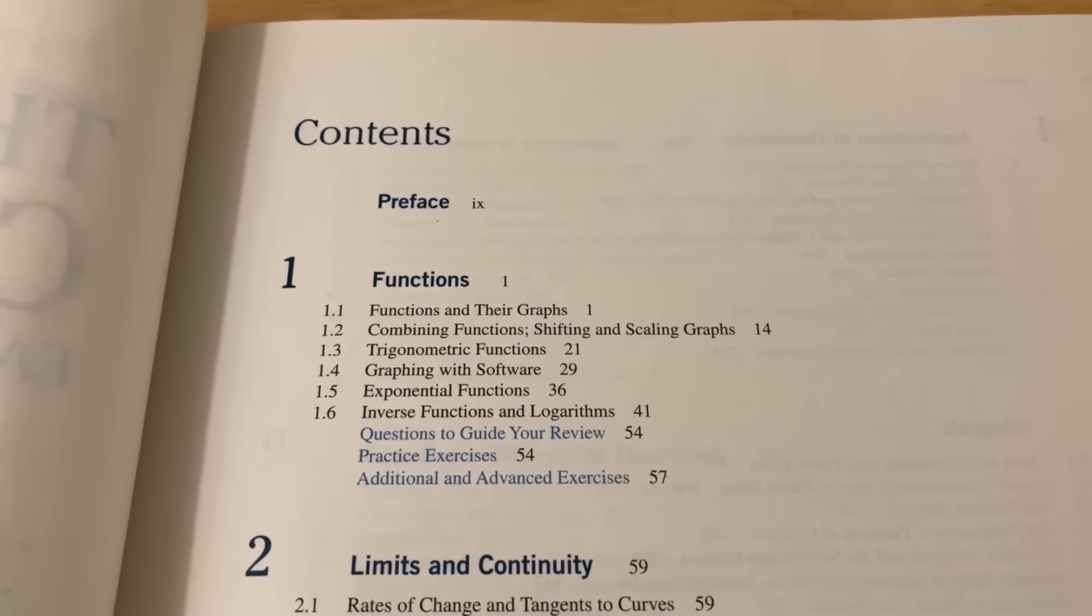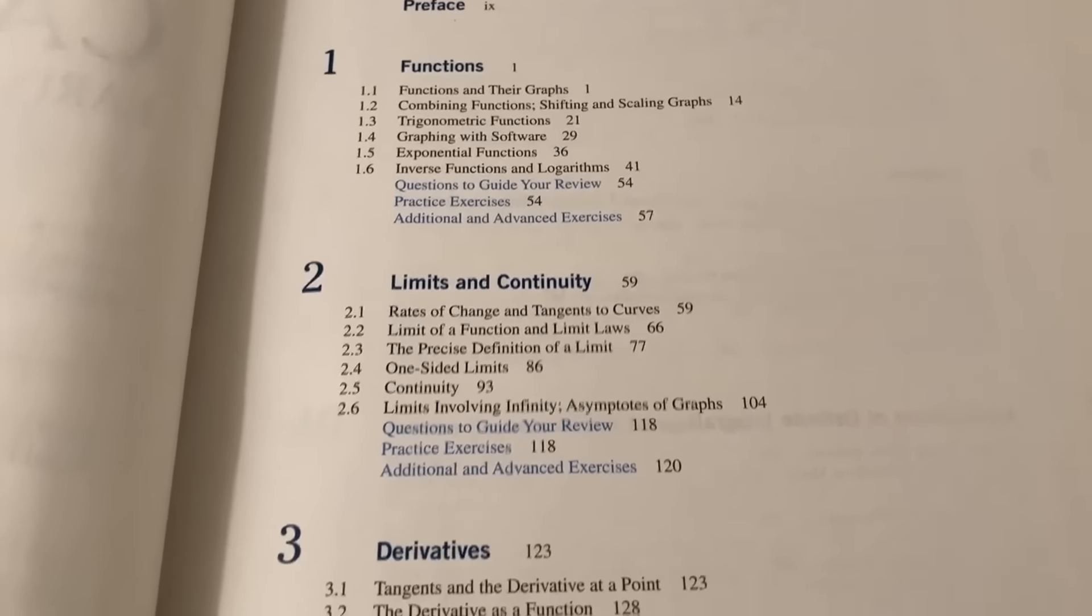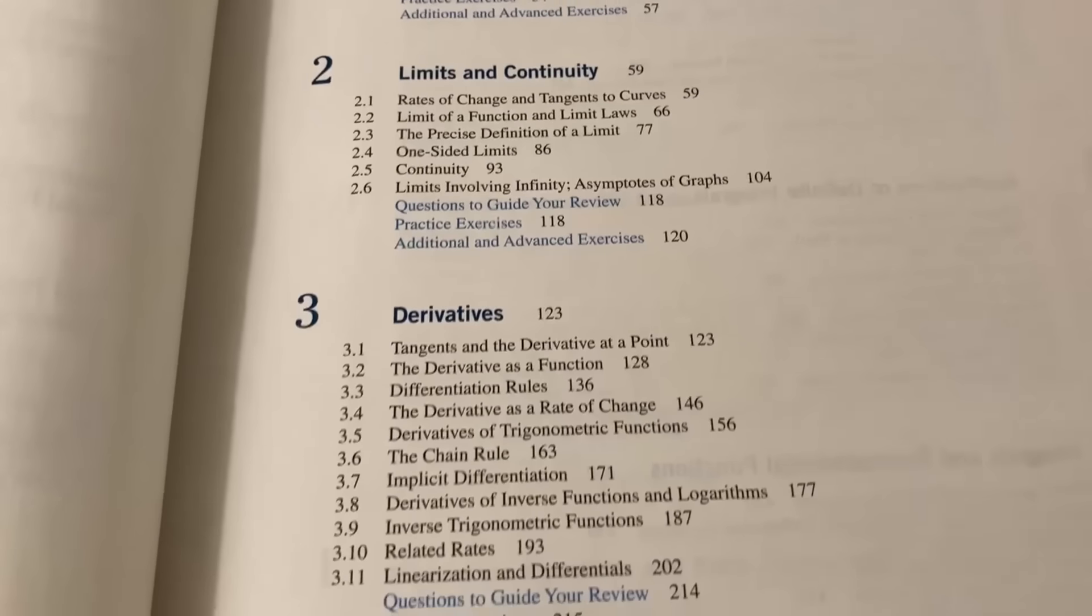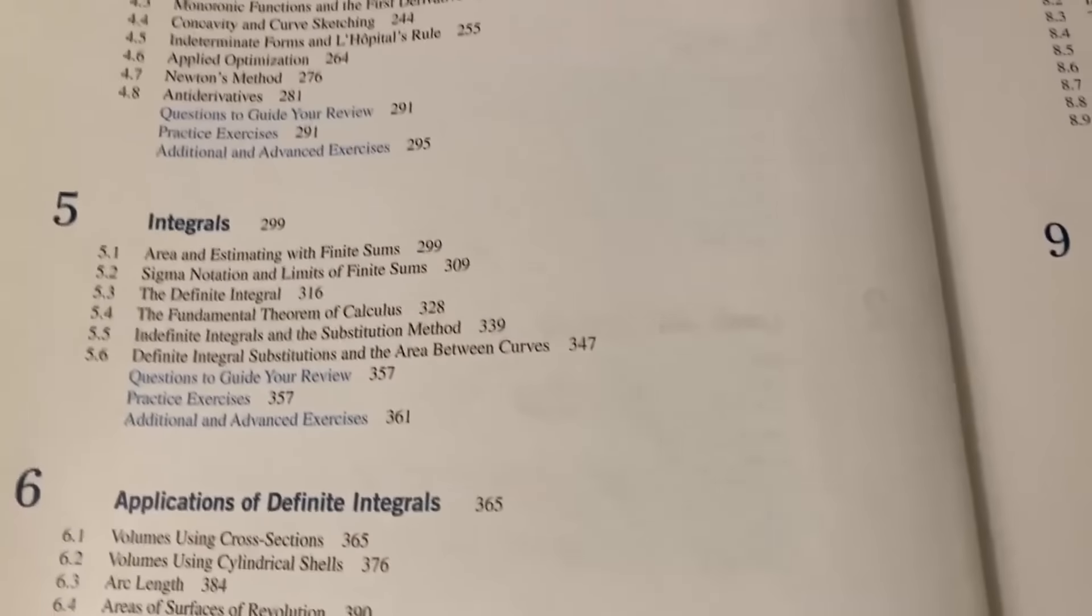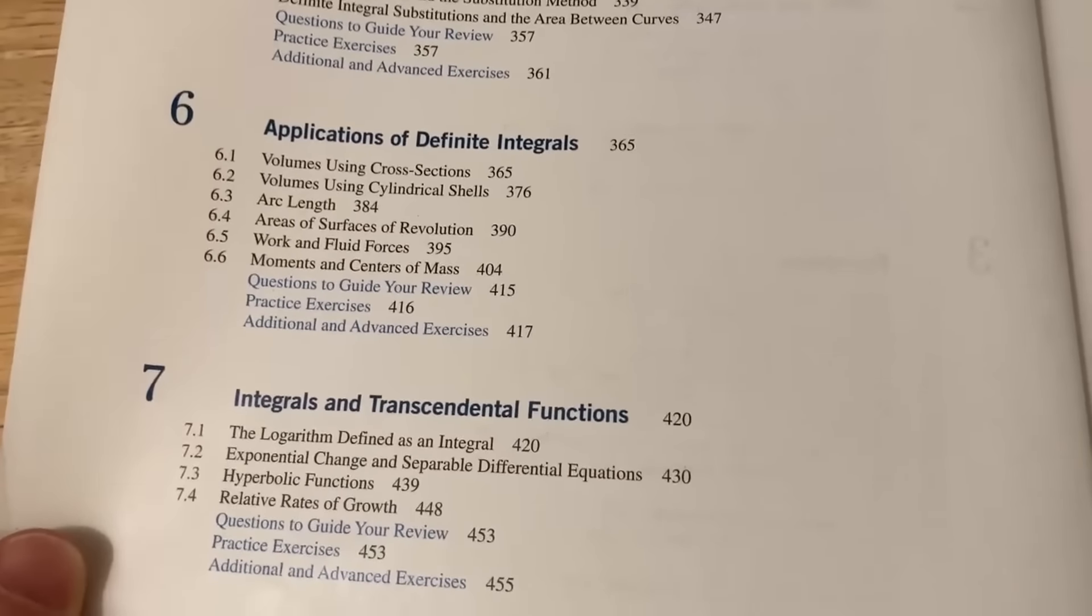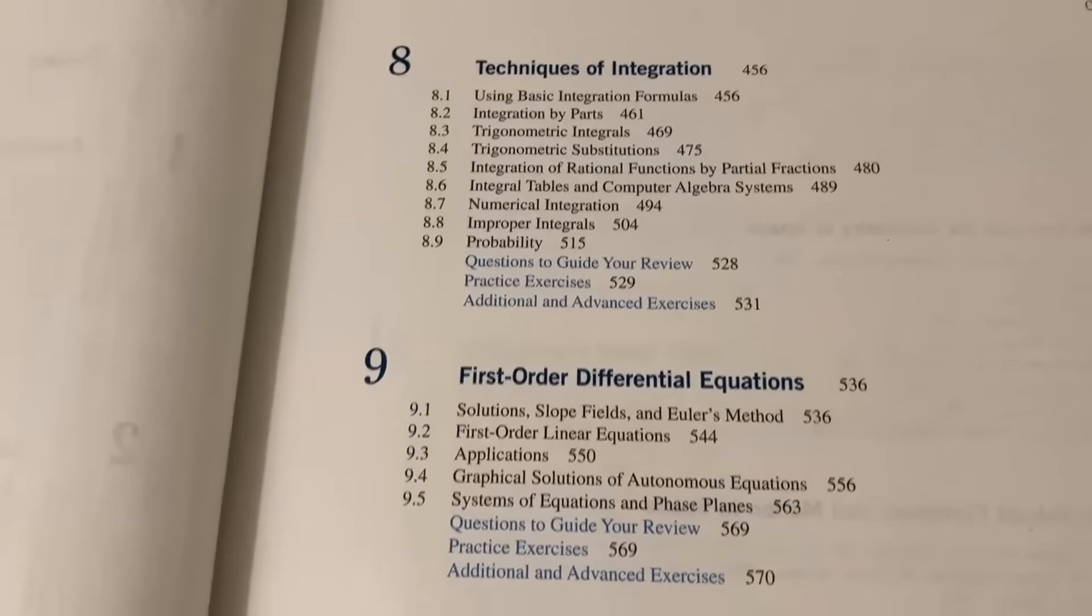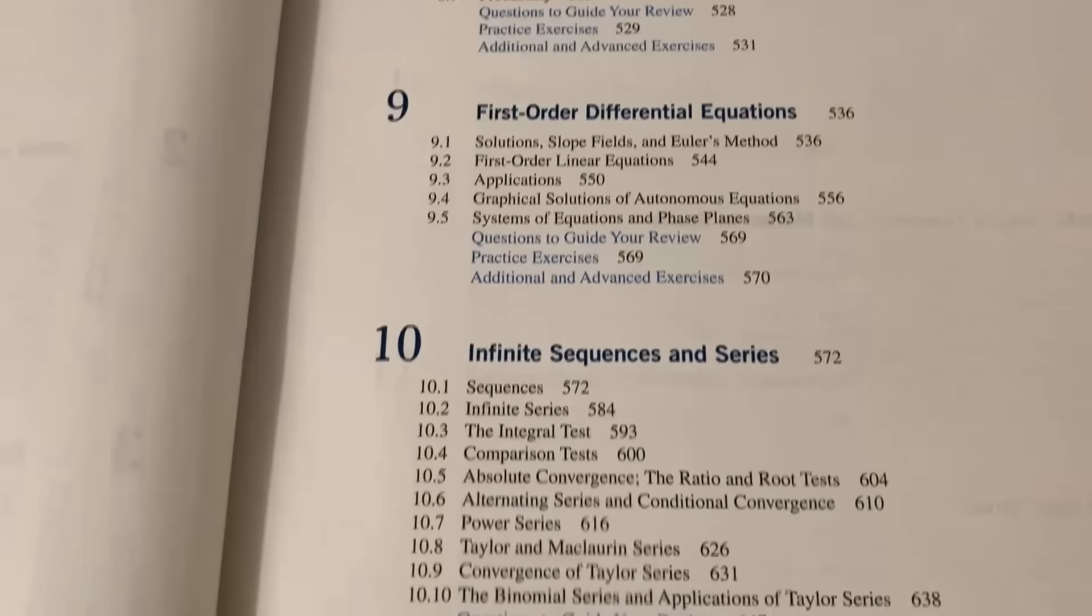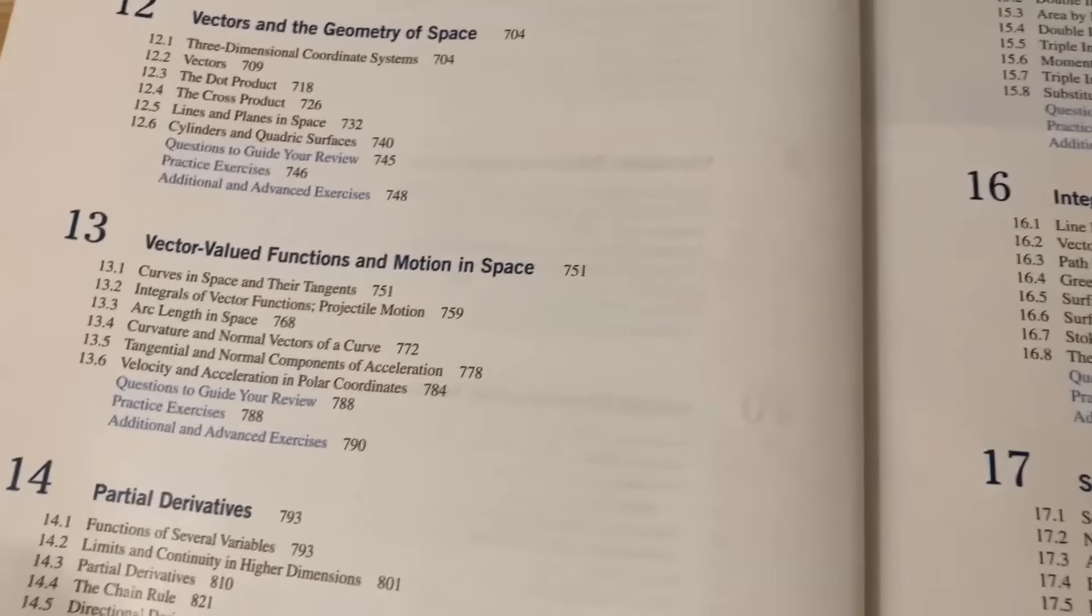So this book has tons of information. I'm just going to slowly pan through all of the contents so you can see what this book contains. But basically, this has everything you would learn if you were to take a Calculus 1, Calculus 2, and Calculus 3 course in college. Now, if your courses are in quarters, then typically you would also have a Calculus 4. So this covers everything you need for all of those courses, which is really amazing. This is a lot of mathematics.